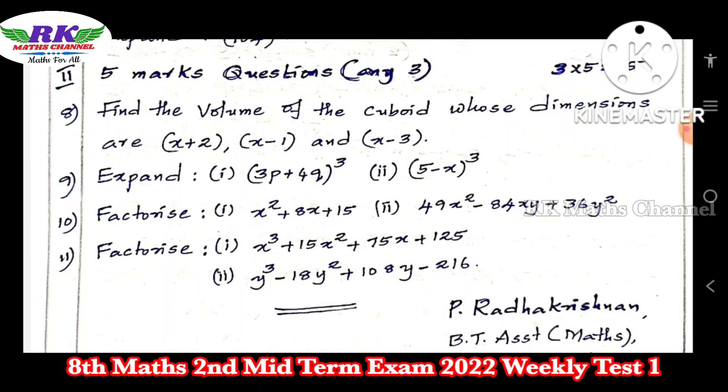Question number 11: Factorize. That's also two questions. That's five marks. One question: Factorize. If you have a plus, then a + b whole cube formula. That's one.